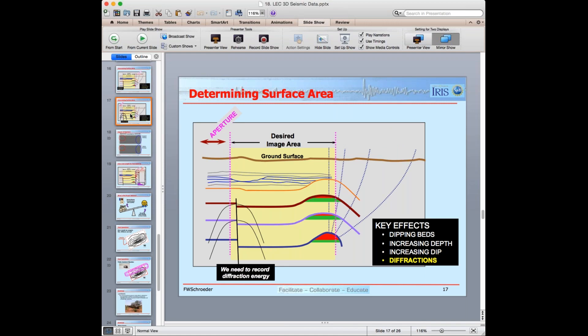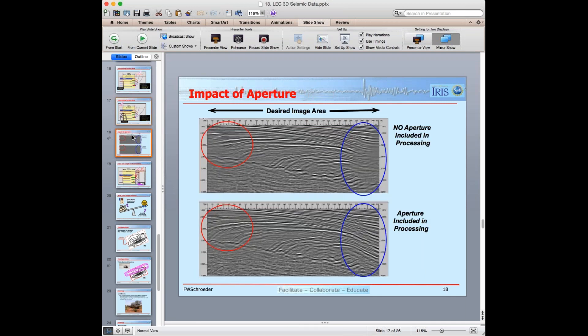And then the next slide, diffractions. I have a fault on the left side of the image area, and I've drawn two hyperbola that would be the diffractions. We have to collect enough data so that we capture those diffractions out to about a 30 degree angle. And so that's another reason why the surface area has to be larger than the image area.